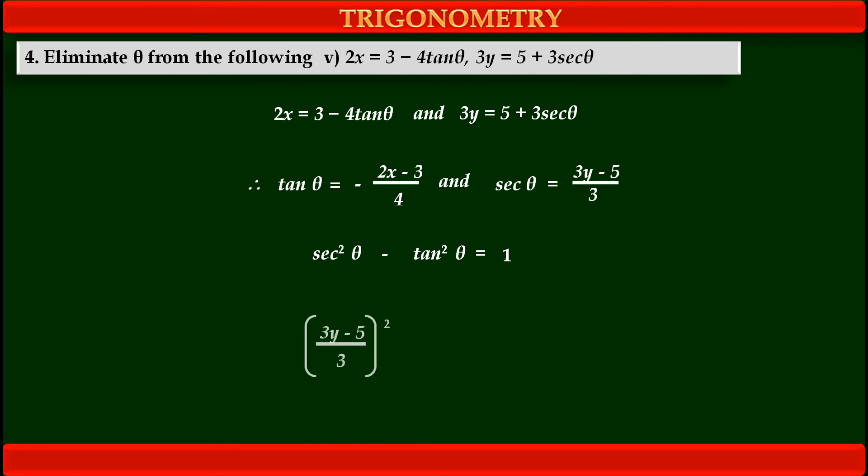So we get in first term, we have to substitute the value of sec theta: 3y minus 5 upon 3 bracket square as sec square theta. Minus in second bracket, we have to substitute the value of tan theta: 2x minus 3 upon 4 whole square equals, in the right hand side, 1 as it is.